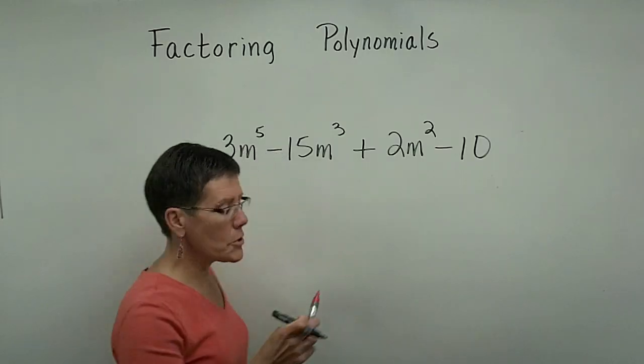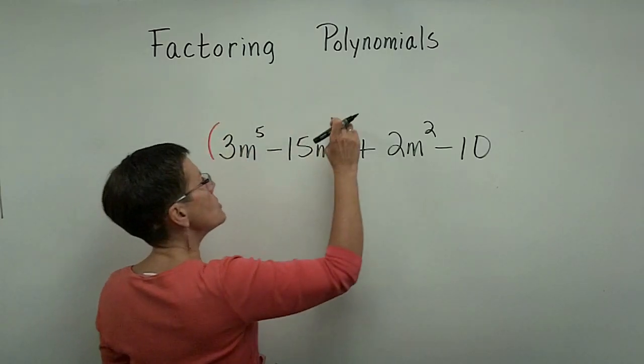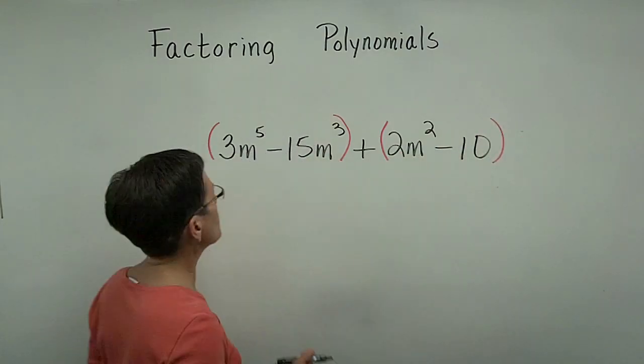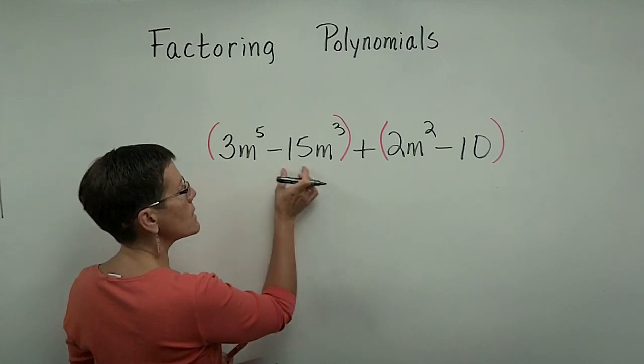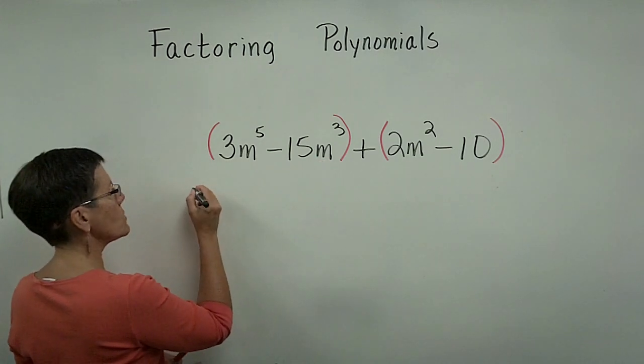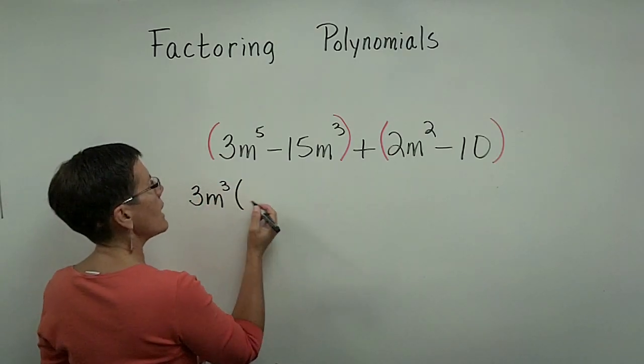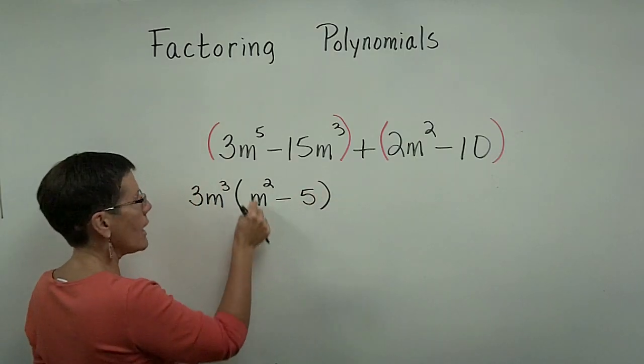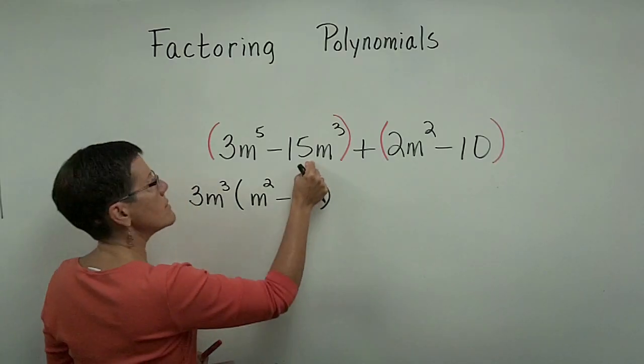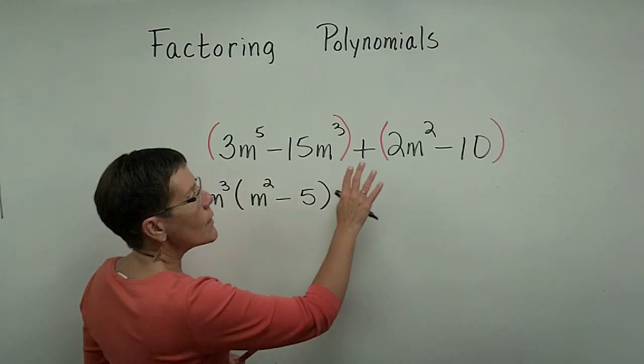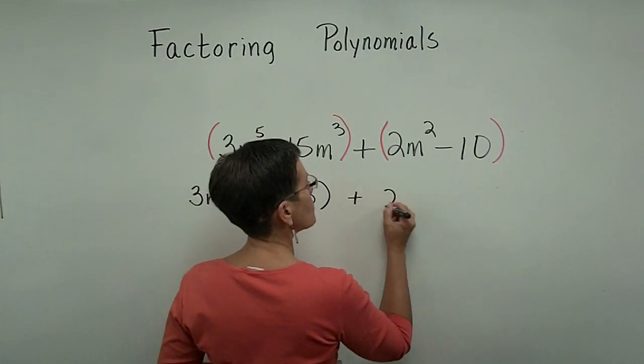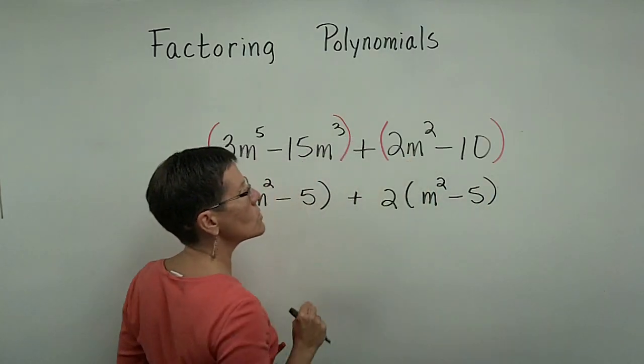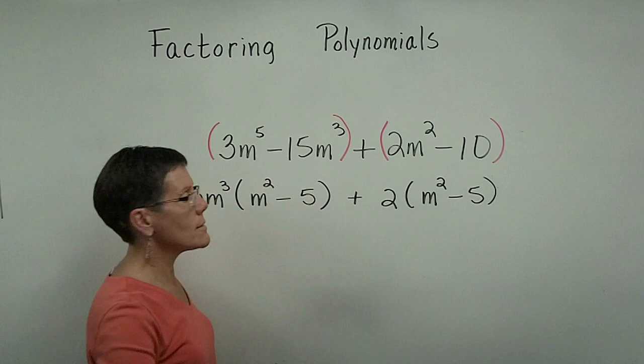This is a polynomial in 4 terms. We'll group the first two and the last two, and we'll take the greatest common factors out of those groups. Here, 3 is common to each of those, and m to the third power. So 3m cubed. And I would now need m squared as my first term here, and then just a minus 5. The common factor here is a positive 2. So we'll factor out 2, and we'll need m squared minus 5 in the parentheses so that 2 times m squared is 2m squared, and 2 times the minus 5 is that minus 10.